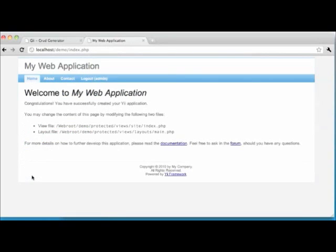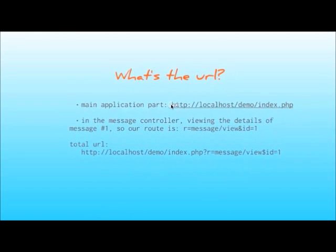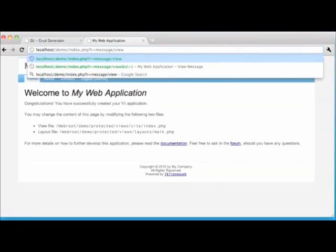After doing this, we're taken back to the home page of our application. Since we have not altered our main menu items to have links to our message CRUD functionality, we'll have to type in the URL to get back to where we were. Using what we learned about Yii request routing in the previous tutorials, we know we need localhost/demo/index.php, and we were in the message controller viewing the details of message number one, so our route is message/view with an ID of one.